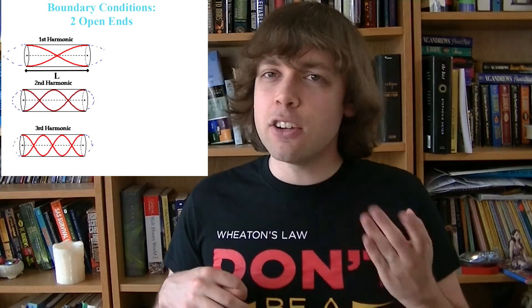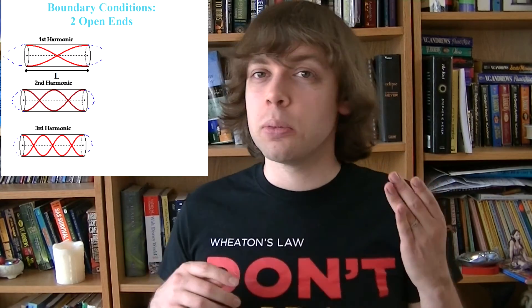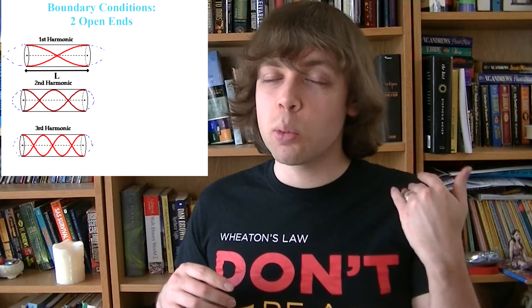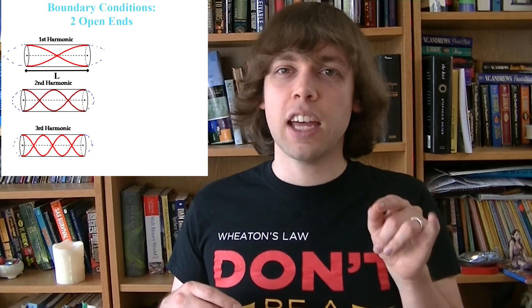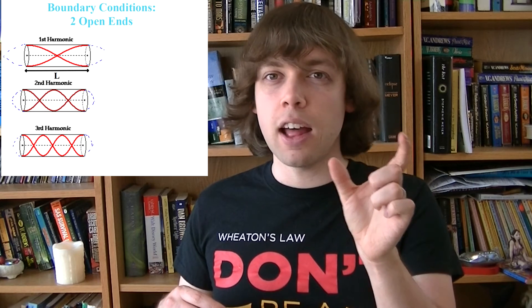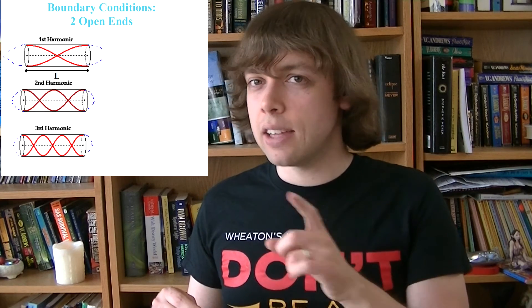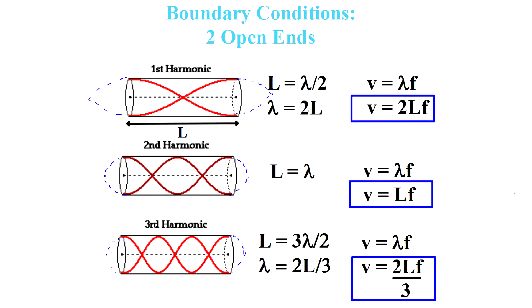When you do exactly the same process for two open ends such as a flute, interestingly the answer comes out exactly the same. Even though the waves look somewhat different, there's the same number of wavelengths in the length L, so the equations are identical for all three harmonics. The first harmonic still has half a wavelength, the second harmonic still contains one full wavelength — just shifted differently — and the third harmonic still contains one and a half wavelengths.